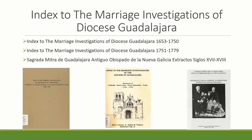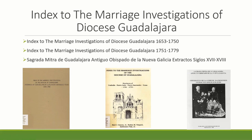Remember that image I showed you with the extraction of the marriage investigation? It comes from this book: Index to the Marriage Investigations of the Diocese of Guadalajara, Province of Coahuila, Nuevo León, Nuevo Santander, Texas, 1653 to 1750. That book has a continuation covering the years 1751 to 1779. And if you're looking for marriage investigations from any other place, I highly recommend the book Sagrada Mitra de Guadalajara, Antibu Vispado de la Nueva Galicia. Unfortunately, FamilySearch has not indexed any of those marriage investigations yet.